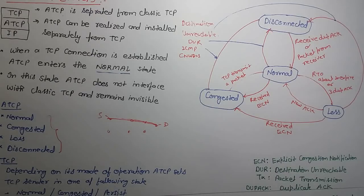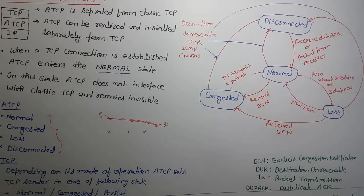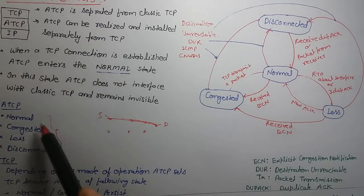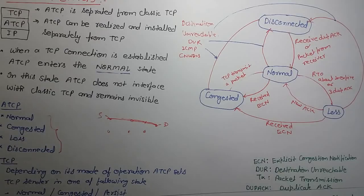Normal and congested states we have discussed. So this is ATCP protocol, used for ad hoc networks. It is not an extension or modification of TCP protocol, but a thin layer that exists between IP and TCP layers. When a TCP connection is established, ATCP enters the normal state — the first state — and then moves into the other states.